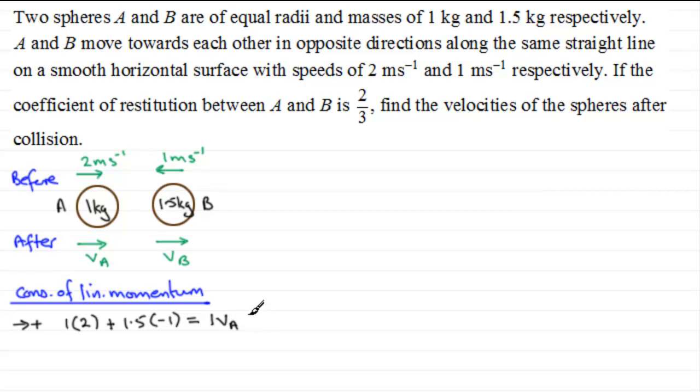And then we add to this the momentum of B after impact. So its mass is 1.5, and its velocity is V_B. It's in the positive sense, the same as velocity of A. So there's our equation so far. If we tidy this up, we've therefore got 2 minus 1.5, which is going to leave us with 0.5. So we've got 0.5 equals V_A plus 1.5 V_B.